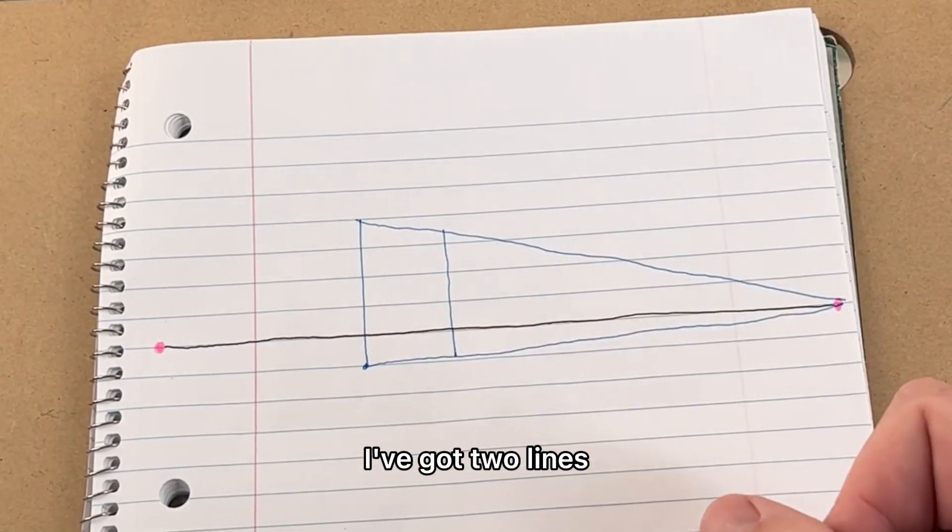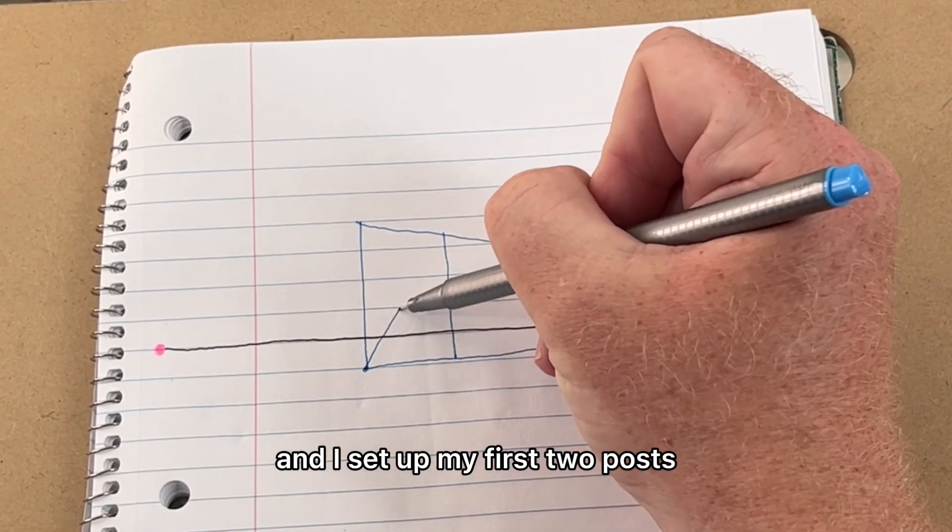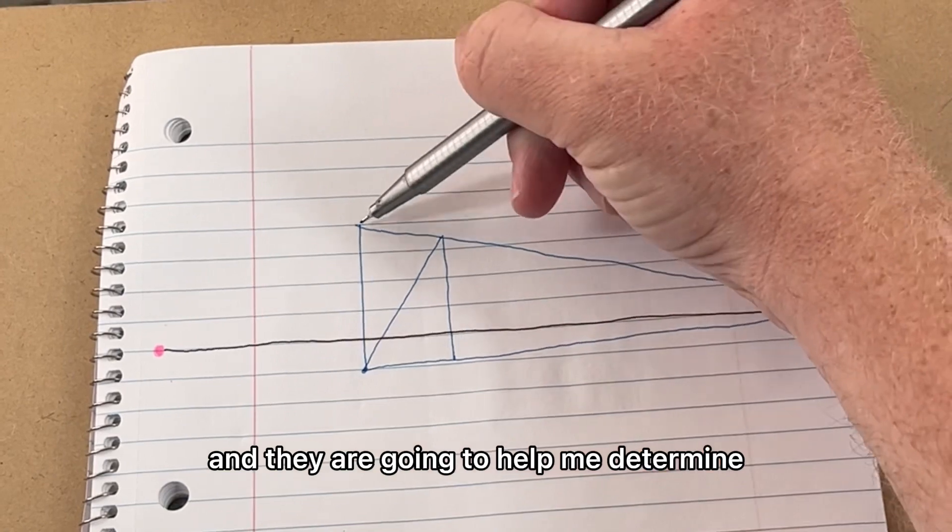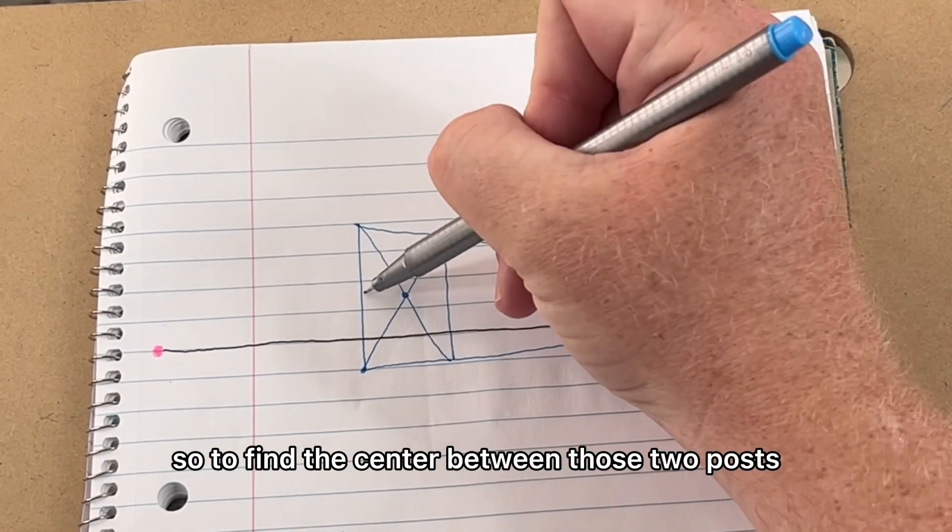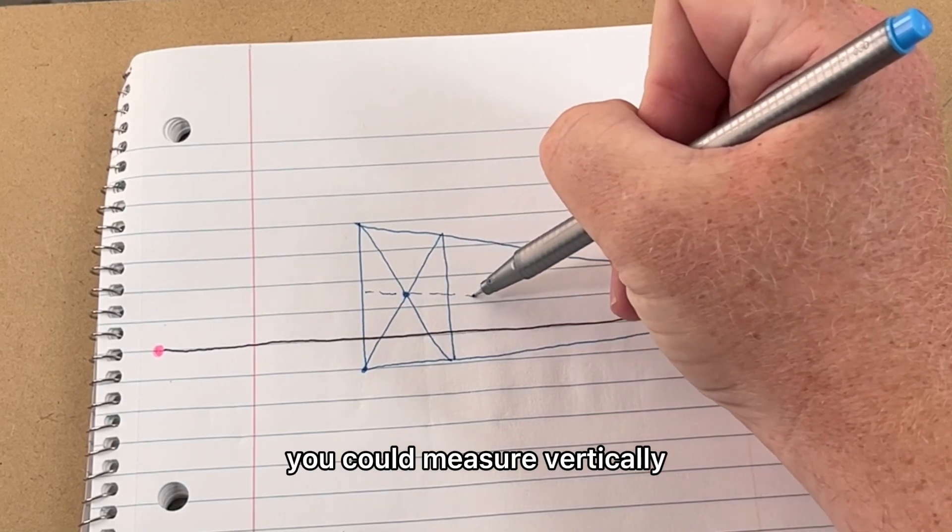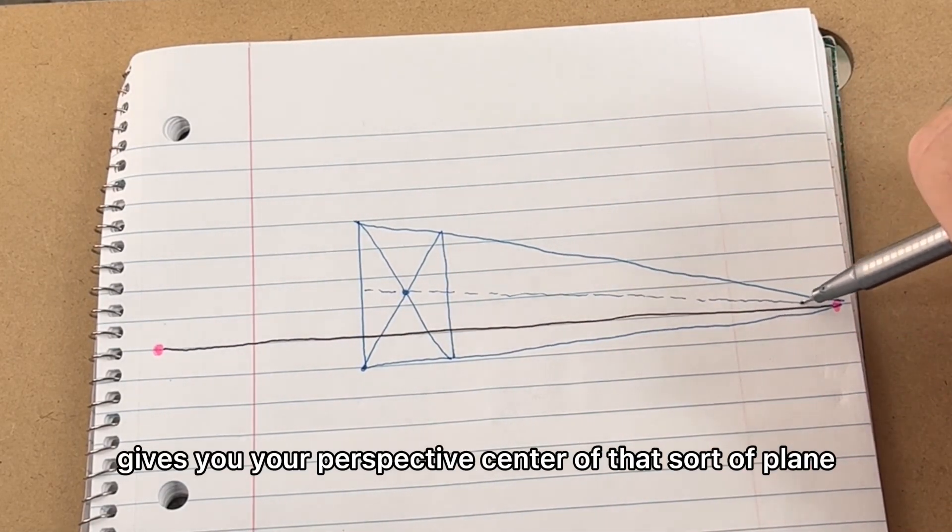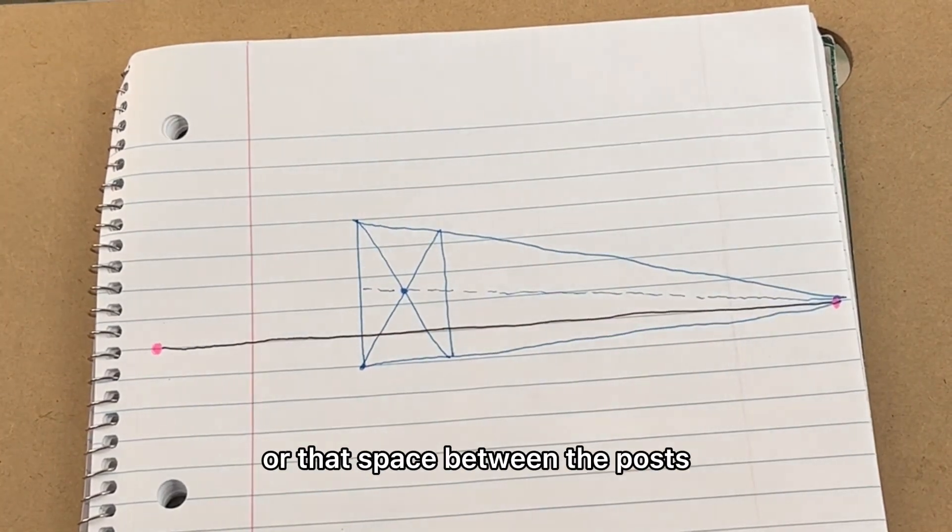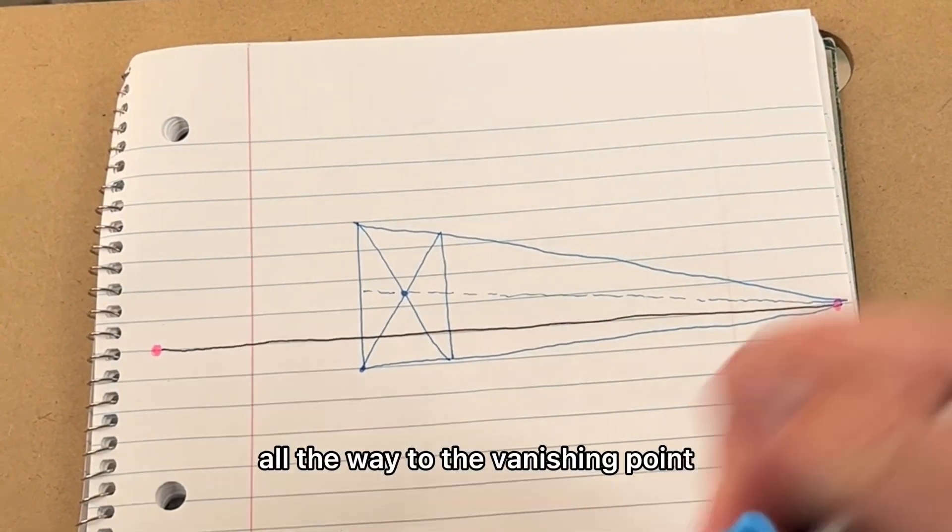Here I am. I've got two lines receding towards the vanishing point, and I set up my first two posts. They're going to help me determine the distance of the next two posts. To find the center between those two posts, you could measure vertically, or you can draw an X. The X gives you your perspective center of that plane or that space between the posts, and you can draw a line from that all the way to the vanishing point.